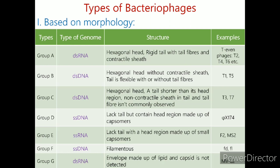Bacteriophages are classified into 7 groups: A, B, C, D, E, F, and G. Group A has a double-stranded DNA type of genome. It has a hexagonal head, rigid tail with tail fibers, and a contractile sheath. Examples of Group A are T-even phages such as T2, T4, and T6. Group B has a double-stranded DNA type of genome. It has a hexagonal head without contractile sheath, and the tail is flexible with or without tail fibers. Examples of Group B bacteriophages are T5 and T1.